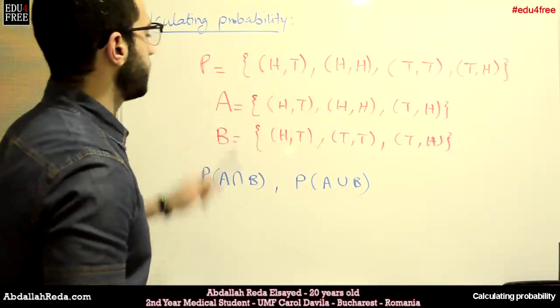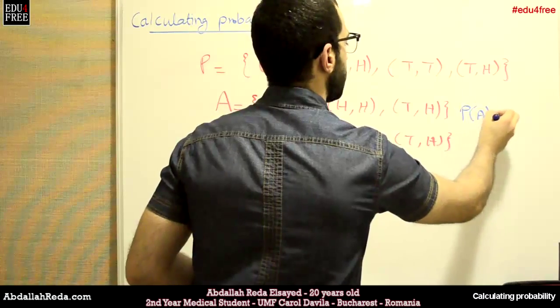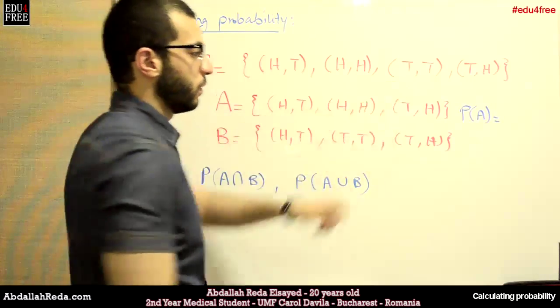So first, the probability of A. Okay, probability of A, as we said, we have here 3. So 3 divided by 4.